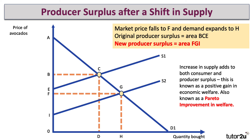An increase in supply will add to both consumer and producer surplus. Consumers are better off — their consumer surplus has gone up from ABC to AGF. Producer surplus is also higher. So in this situation, an increase in supply is going to increase total welfare to AGI. And if both parties are better off, that's called a Pareto improvement in welfare.